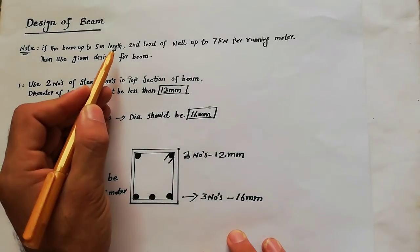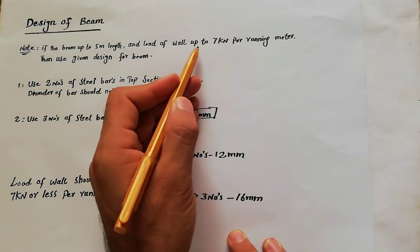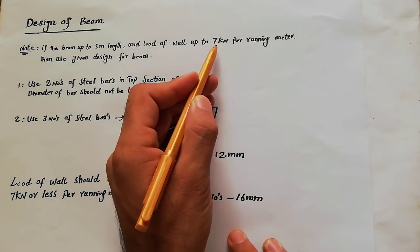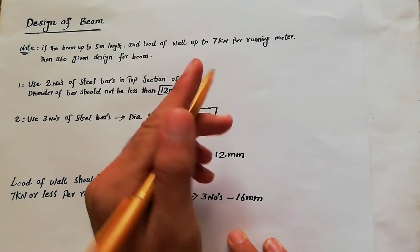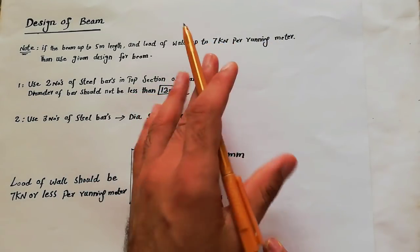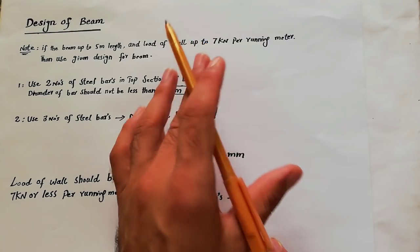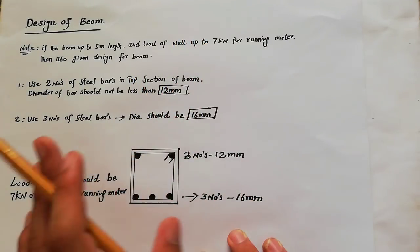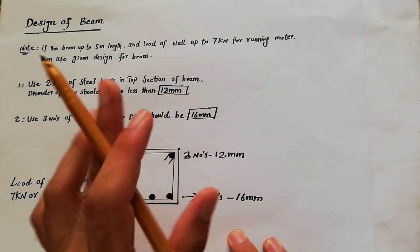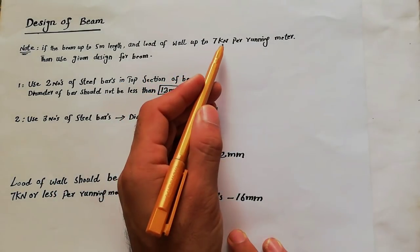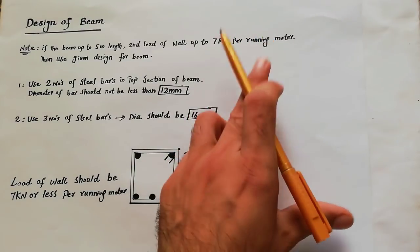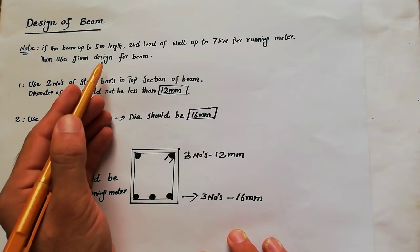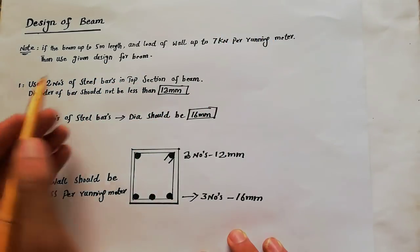Note: if the beam is up to 5 meter length, and the load of the wall is up to 7 kilonewton per running meter or less - not more than 7 kilonewton. If your load is more than 7 kilonewton, then you cannot use this steel which I am telling you. So if your load is 7 kilonewton or less per running meter wall load, then use the given design for beam.